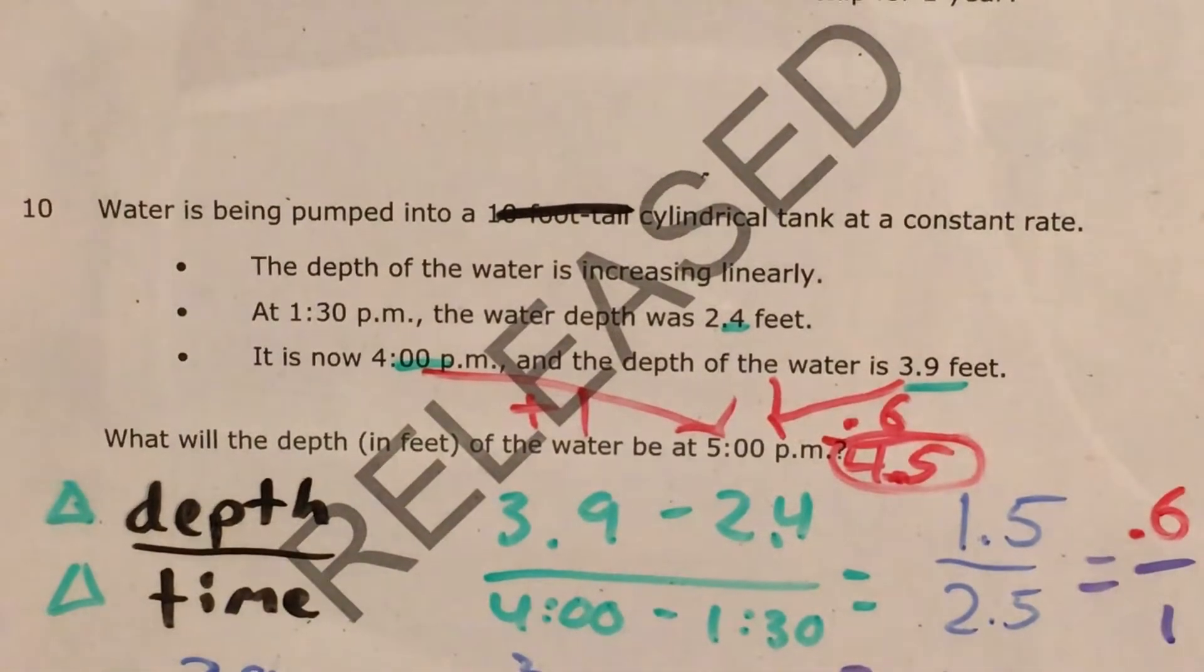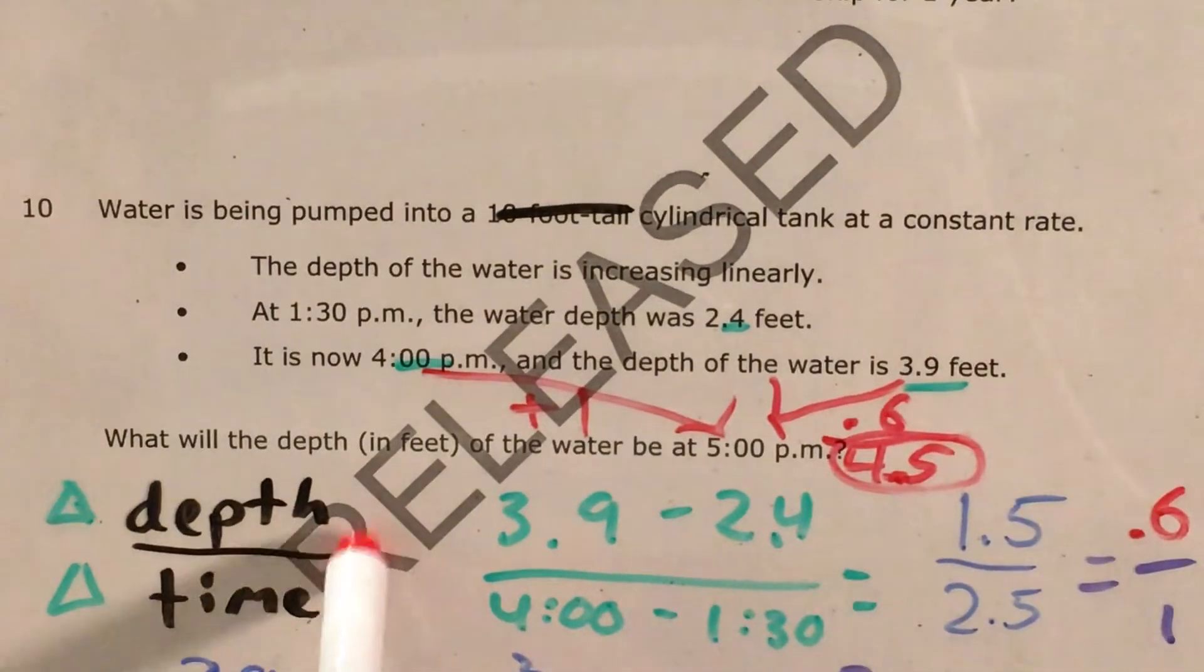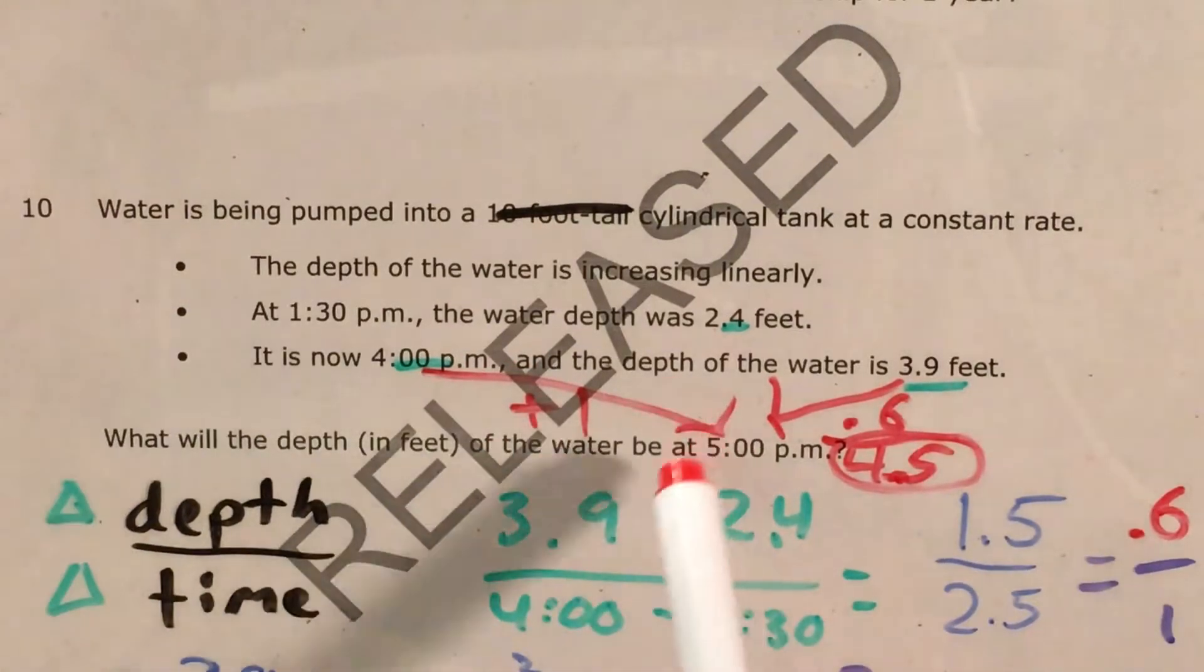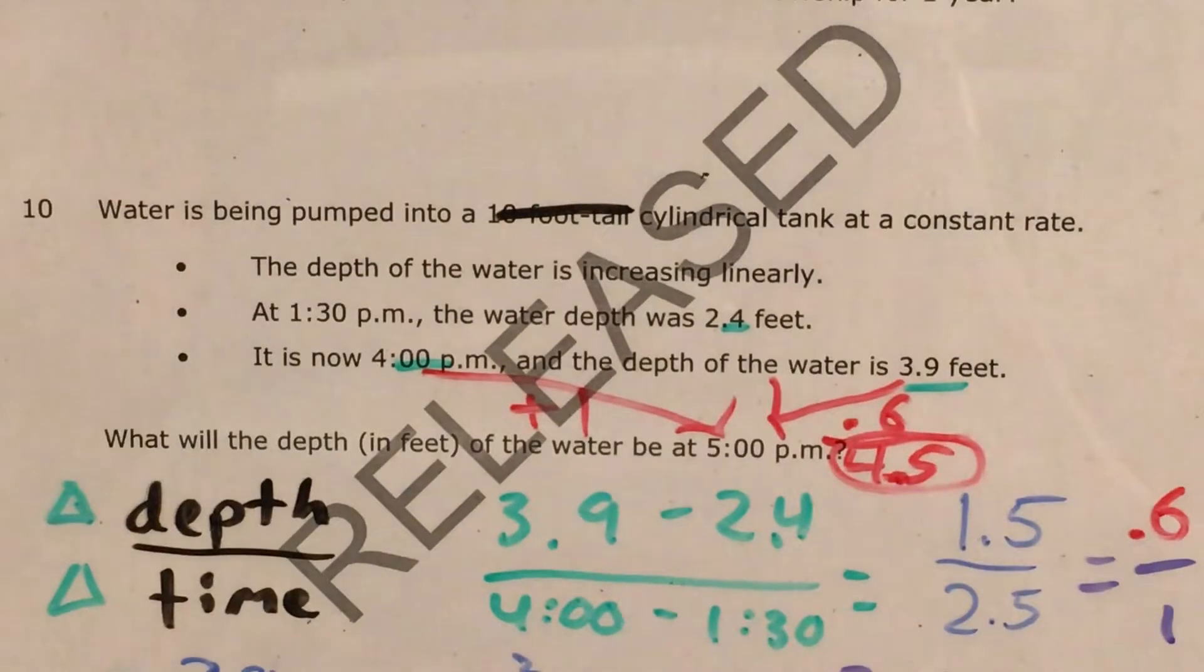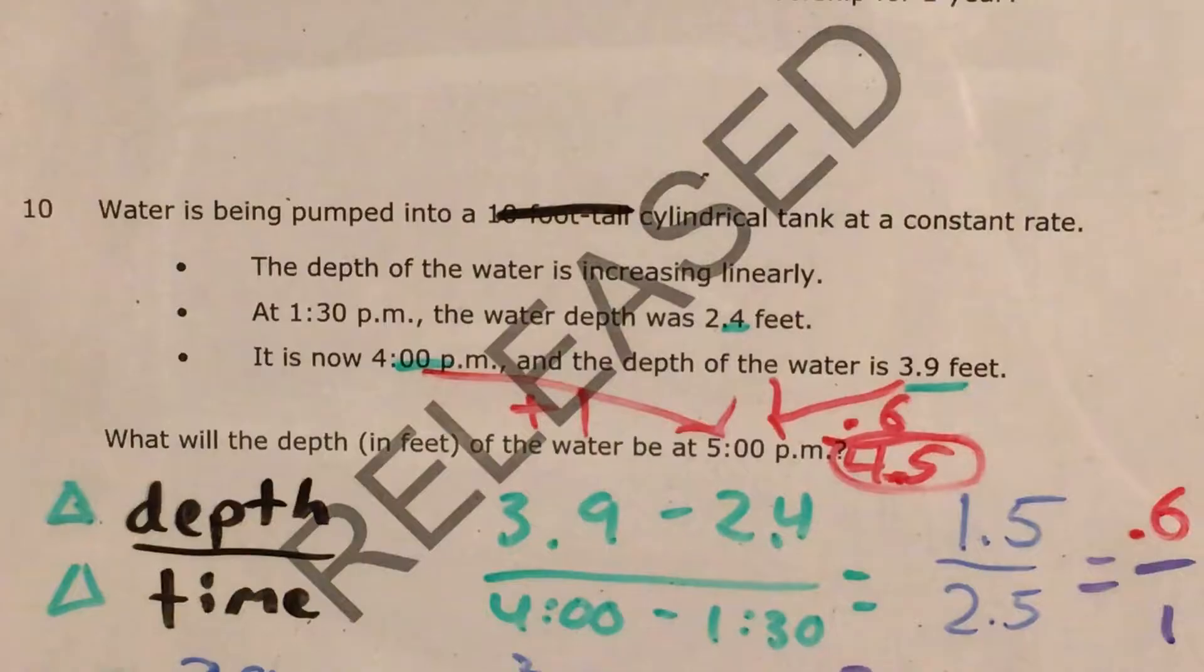Now that was a really weird rate of change problem, mostly because of the time aspect. But once we figured out that we were supposed to measure how the depth of the water was changing over time, literally over time again, that gave us the fraction language. We took the later depth minus the earlier depth, the later time minus the earlier time. We had to do some finagling with the decimals, with fractions and so on. And again, there were a couple other ways to get 6 tenths of a foot in 1 hour. But then we just had to extend 4 o'clock to 5 o'clock, add 1 hour, add the corresponding change in the depth of the water, and we got 4 and 5 tenths.